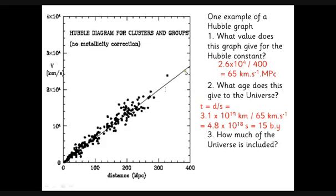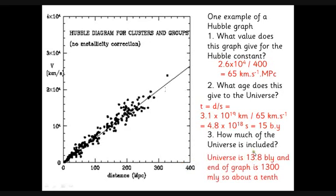The last thing to think about is how much of the universe have we actually included in this graph. This will become important later. This is 400 megaparsecs, so if we multiply by 3.26, that's about 1,300 million light years. But the universe is 13 billion light years, so we're only looking at about a tenth of the universe on this part of the graph.